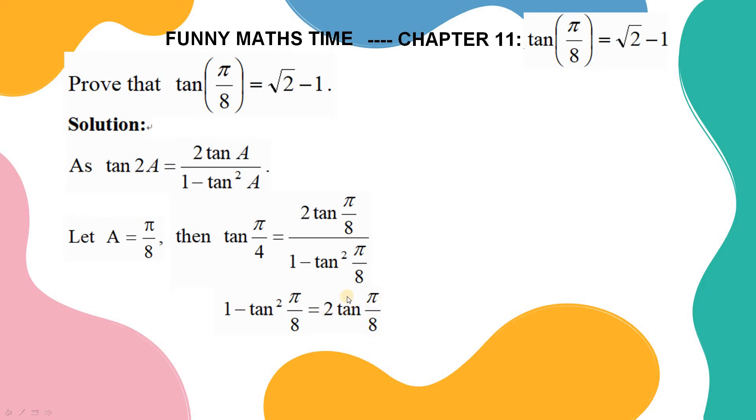Change the terms from the right to the left. This becomes tangent squared pi over 8 plus 2 tangent pi over 8 minus 1 equals 0.